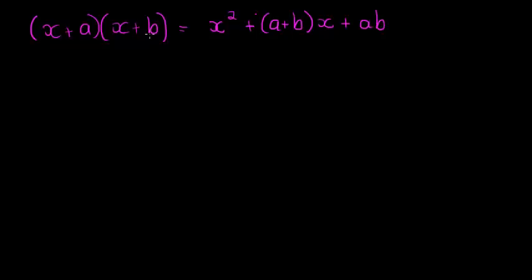Now, a special case I want to look at is what if b was the same as a, so it was also a, but it had a negative. In other words, we have x plus a and x minus a.